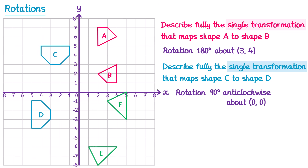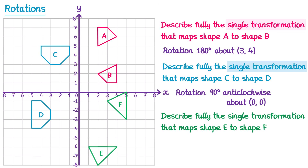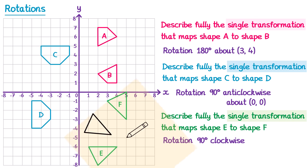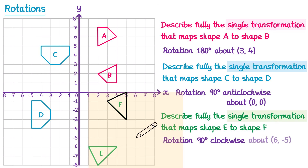And let's try the final question: describe fully the single transformation that maps shape E onto shape F. It's a rotation. We trace shape E and turn it until it fits shape F — this takes one quarter of a turn clockwise, so it's 90 degrees clockwise. We then return the tracing paper to shape E and try to find the centre of rotation. After a couple of attempts, turning one quarter of a turn clockwise fits perfectly at the point with x-coordinate 6 and y-coordinate −5. So we say the rotation is about the point (6, −5).